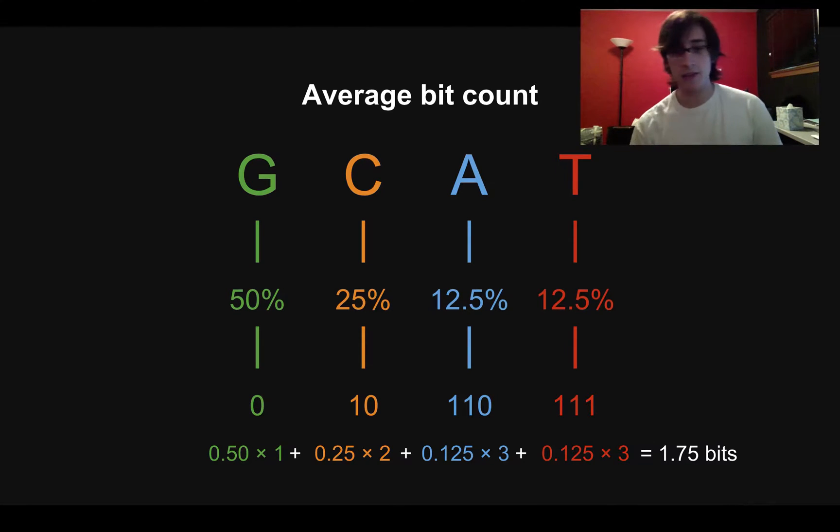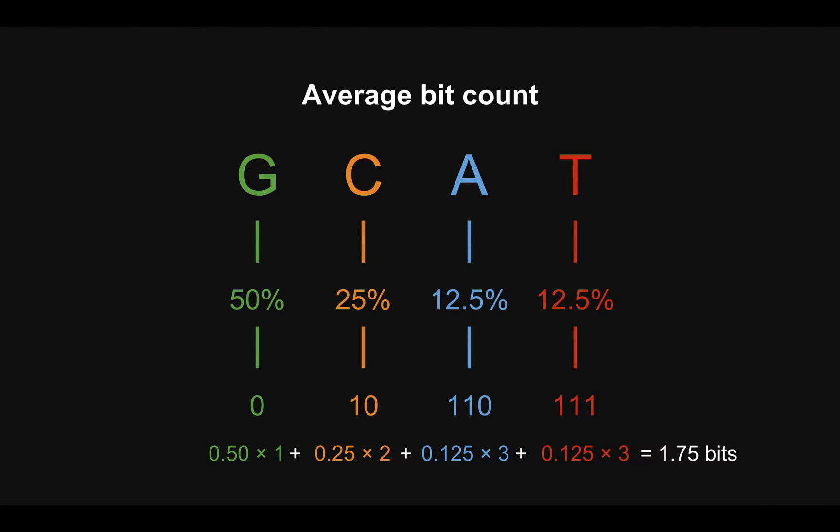And the answer, in this case, if we actually do the math like I've done here, is 1.75 bits per letter. And this is less than the answer we got with the original code where everything was two bits because that was two bits per letter.